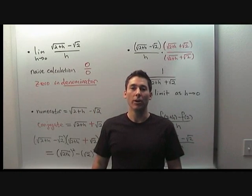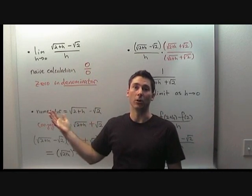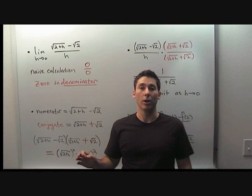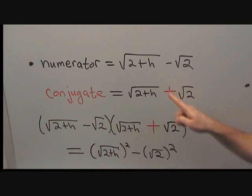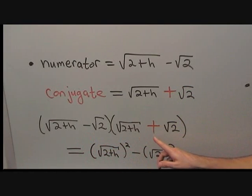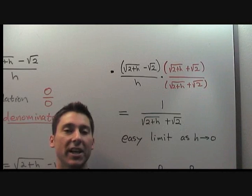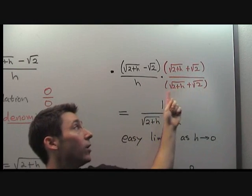Let's do a quick recap. As usual, the first thing is always to perform a naive calculation. For our limit, that resulted in zero divided by zero, which is illegal. The problem is the zero in the denominator. For the next step, we tried to eliminate the zero in the denominator by manipulating the expression, with the goal of removing the square roots. The conjugate expression is almost the same as the numerator, but the minus changes to a plus. When we multiply the numerator by its conjugate, the squares cancel the square roots. We introduce the conjugate by multiplying by one, written as root two plus h plus root two all over root two plus h plus root two.